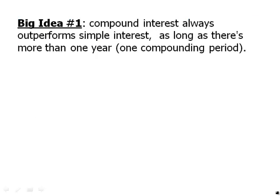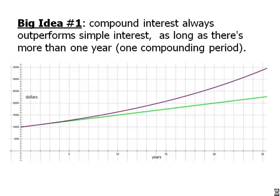Compound interest always outperforms simple interest as long as there's more than one year — that is, more than one compounding period. This graph really summarizes it. The green line is the straight line of simple interest; the purple curve is compound interest. Notice that it curves away from simple interest — it accelerates away. In the short term it does a little bit better, but the longer we go, the more it diverges and does much, much better than simple interest.